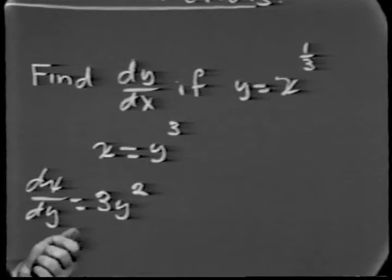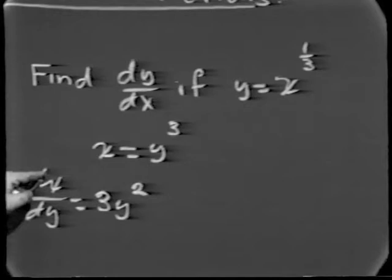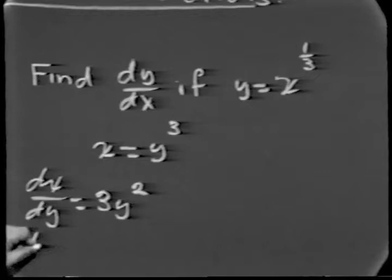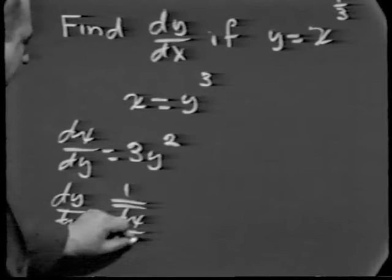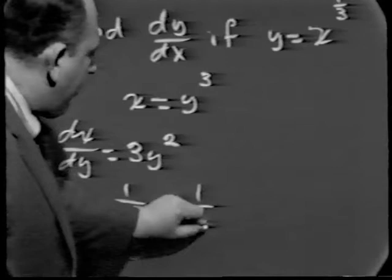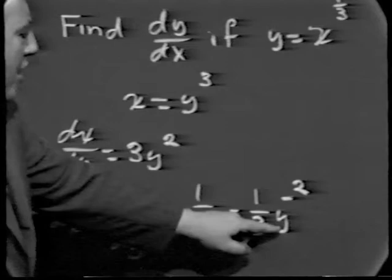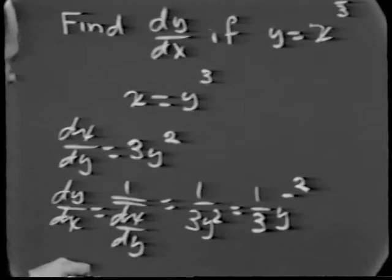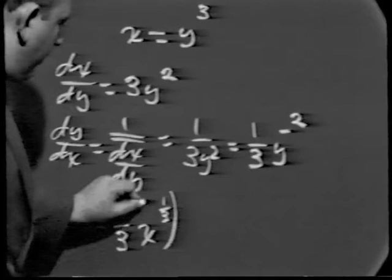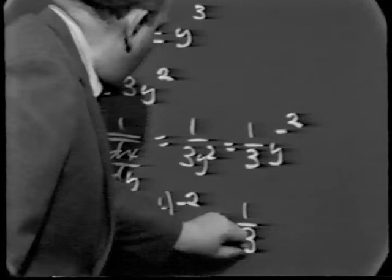If we use the result from when we discussed the chain rule — that dx/dy is the reciprocal of dy/dx — then dy/dx is 1 over 3y squared, which is 1/3 times y to the minus 2. If we recall that y equals x to the 1/3, this can be written as 1/3 times x to the 1/3, all to the minus 2, giving us dy/dx equals 1/3 times x to the minus 2/3.